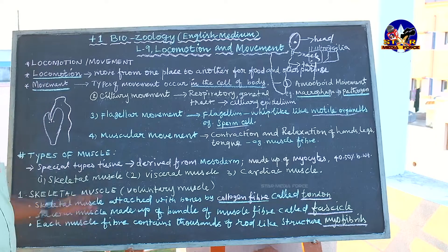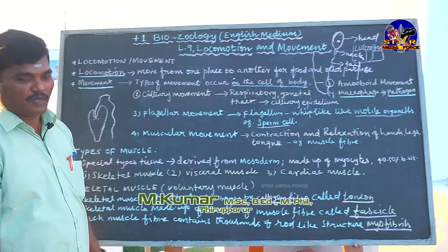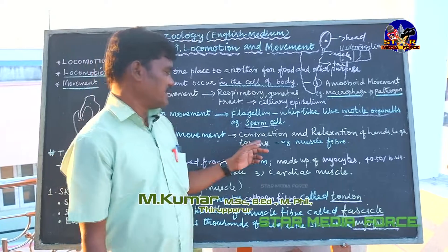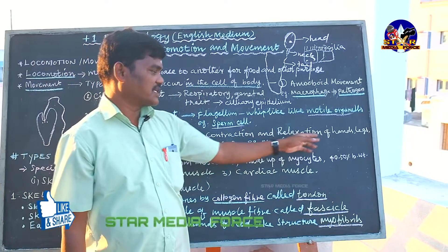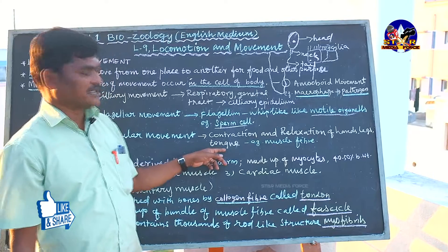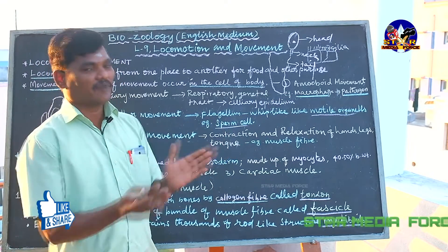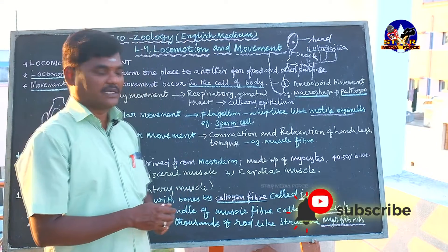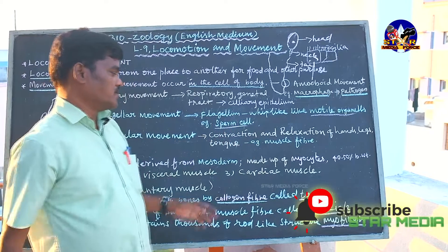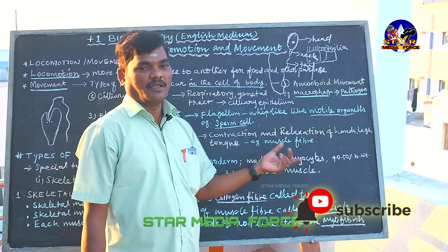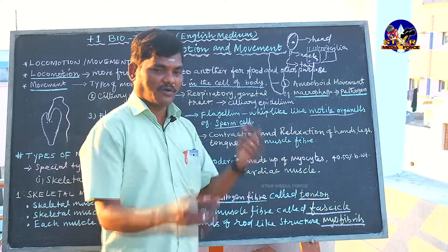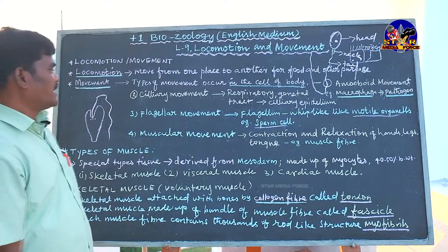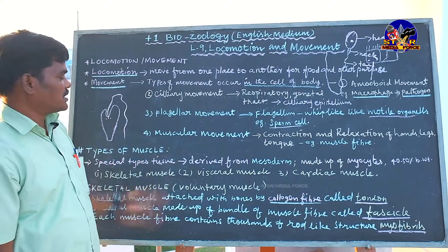The fourth type is muscular movement. In higher animals like human beings, we have many muscles and we move from one place to another with their help. This is the contraction and relaxation of hands, legs, and tongue. Inside these organs there are muscles with contractile proteins, and through contraction and relaxation we move. This is called muscular movement. So there are four types of movement: amoeboid, ciliary, flagellar, and muscular.